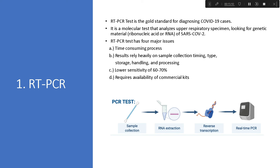Second, results rely heavily on sample collection timing, type, storage, handling, and processing — any malfunction in sample collection or specimen storage causes major issues. Third, it has lower sensitivity — around 60 to 70 percent — so false positives are also detected, which is not a good thing.